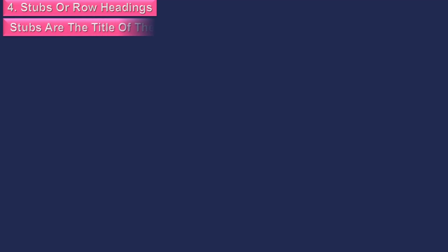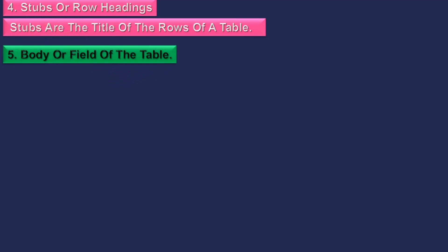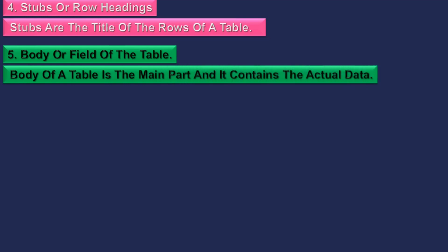4. Stubs or Row Headings — stubs are the title of the rows of a table. 5. Body or Field of the Table — the body of a table is the main part and it contains the actual data.